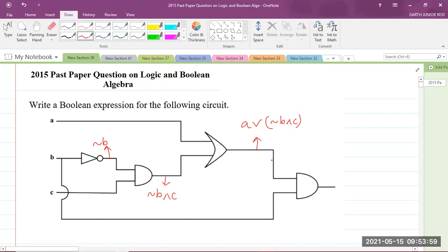So when both of those go through the AND gate, our output is going to be A or NOT B and C, AND B. Please ensure to use your brackets. The brackets are extremely important.